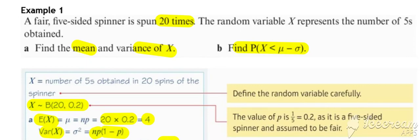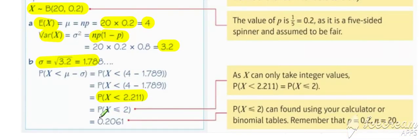Subtract it away from the mean and then we've got our probability that X needs to be less than 2.211. From our calculator that gives us a probability of 0.02061.